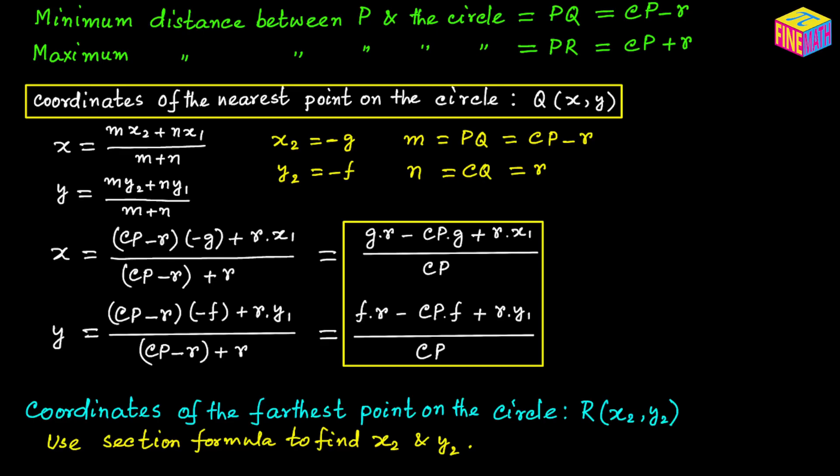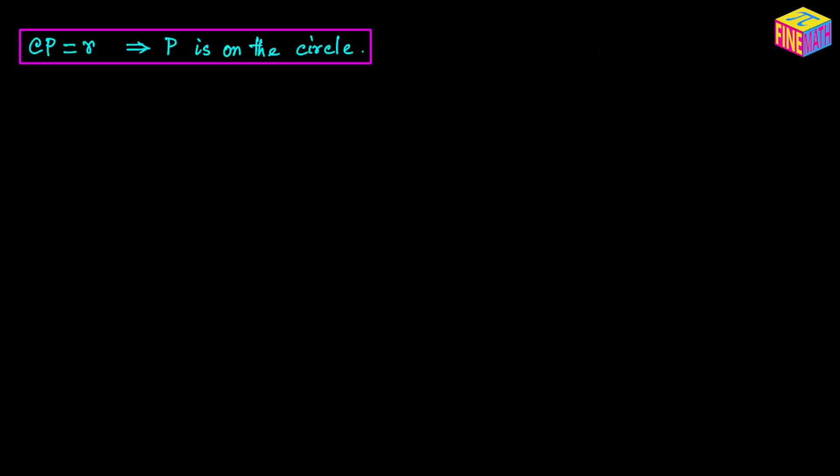Next, let's take the second scenario where CP = R, meaning point P is on the circle. Using the same derivation, the necessary condition becomes: x₁² + y₁² + 2gx₁ + 2fy₁ + c = 0. Previously this expression was greater than 0 when P was outside the circle; now with CP = R we use an equals sign.